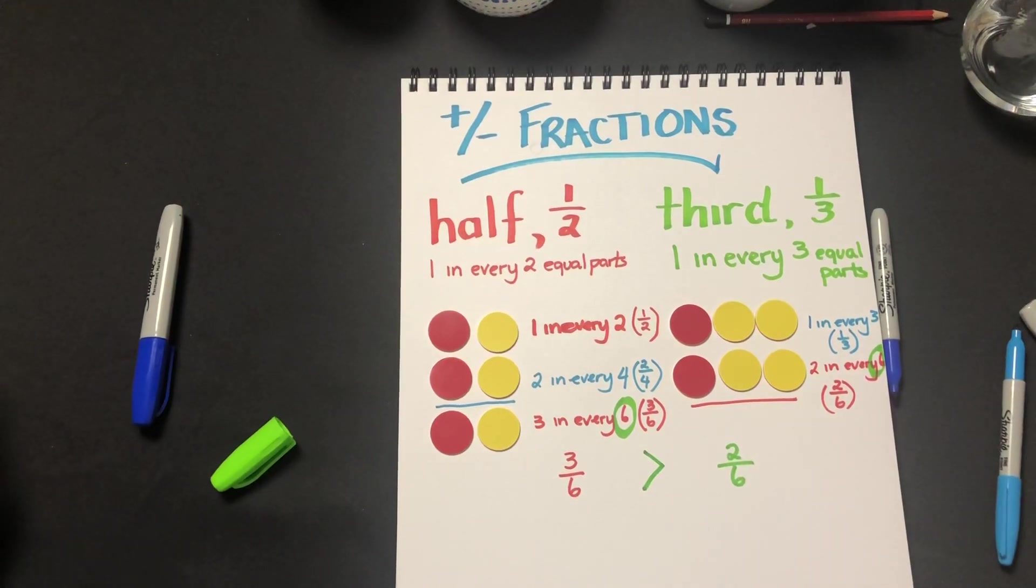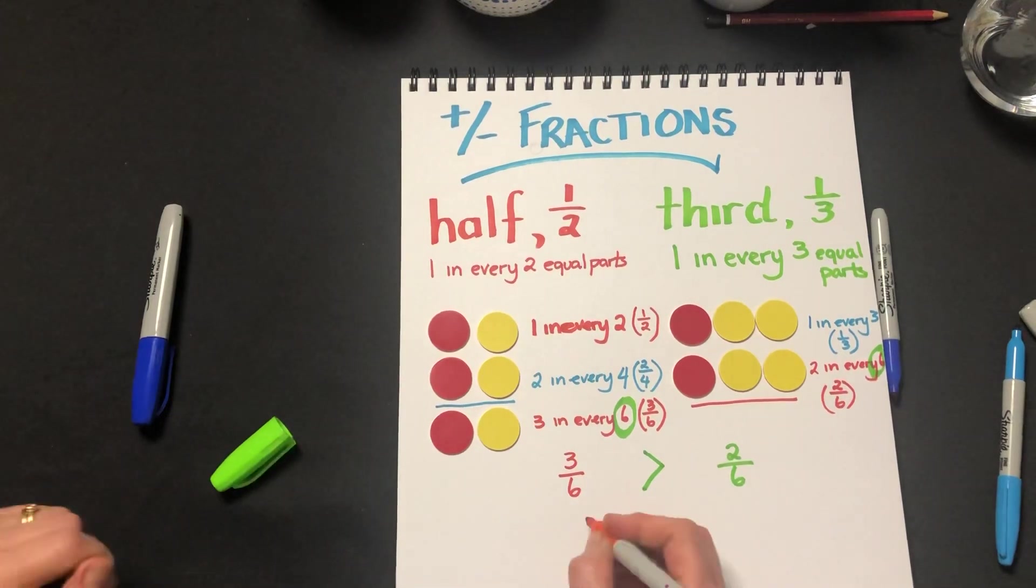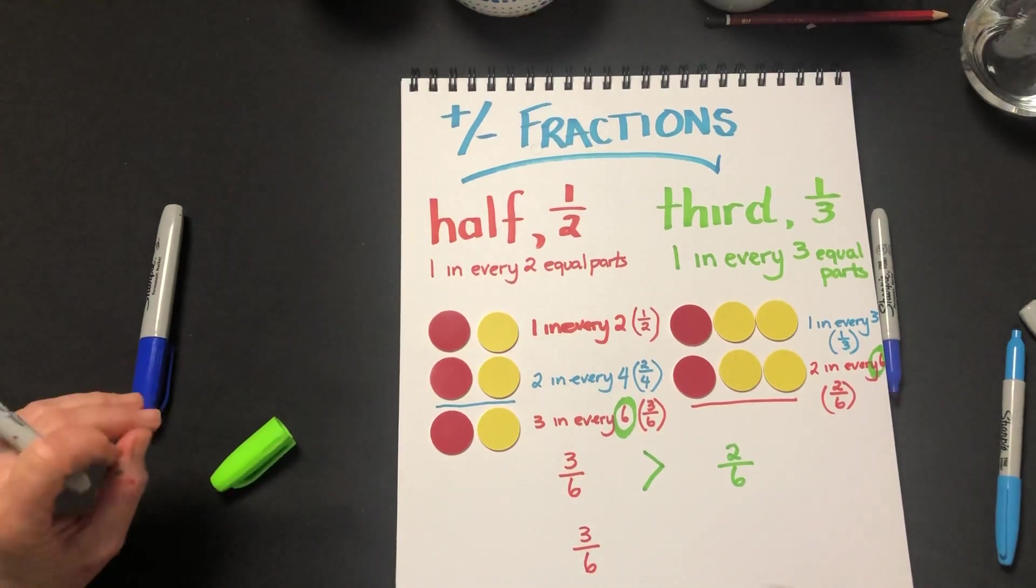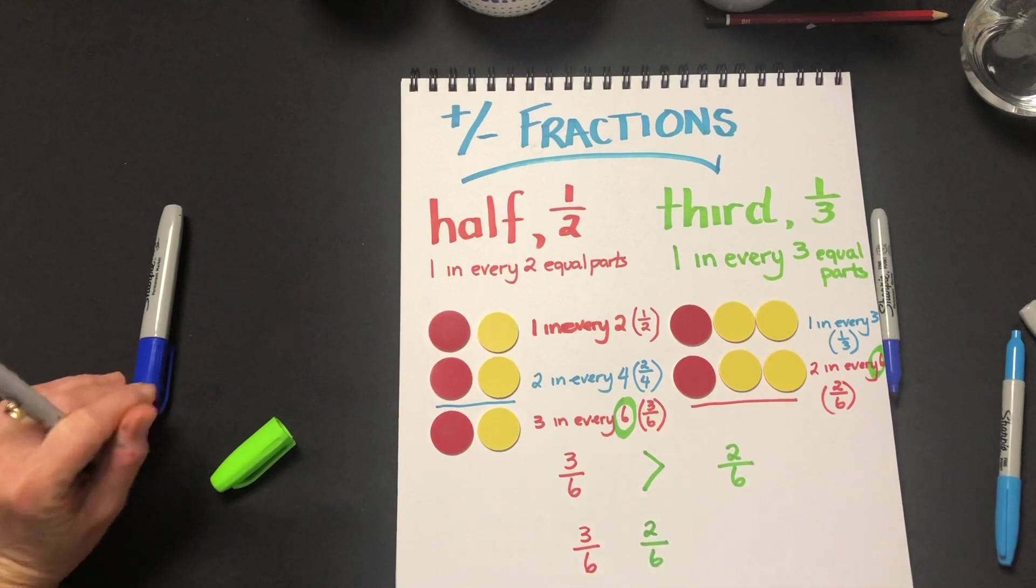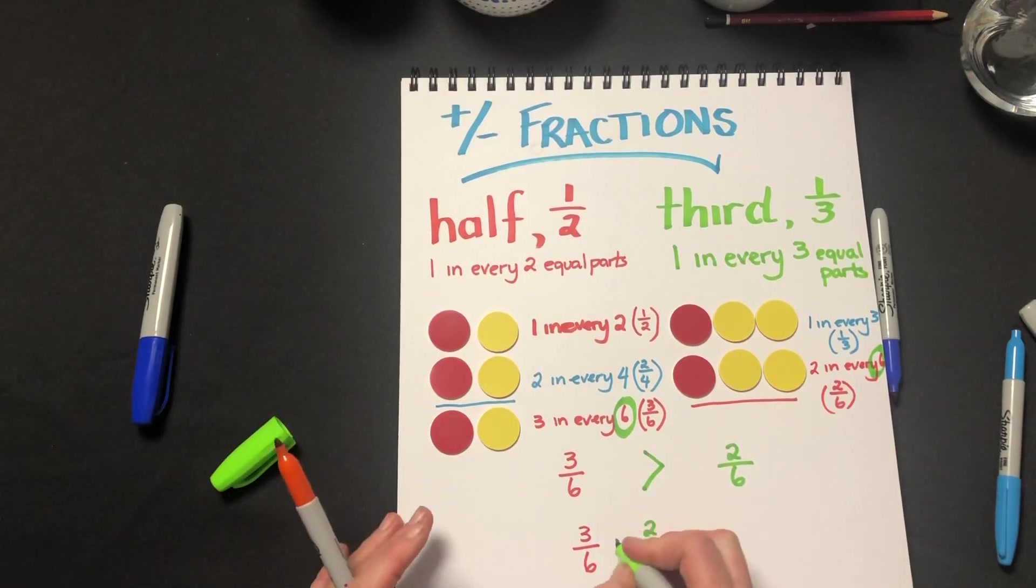But also now we can add the fractions. We've got them with the same denominators. And if the students have had plenty of experience adding their area models, they'll know that three sixths plus two sixths is going to give us a total of five sixths.